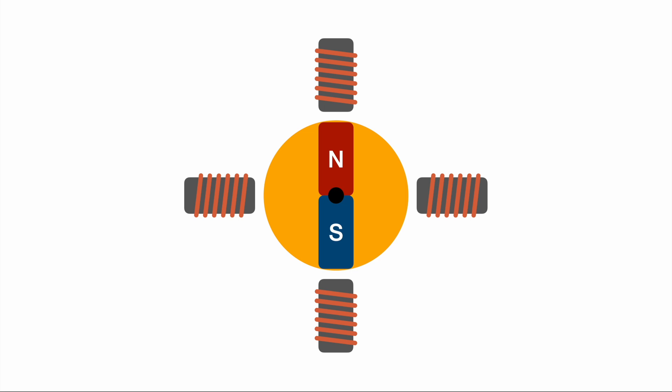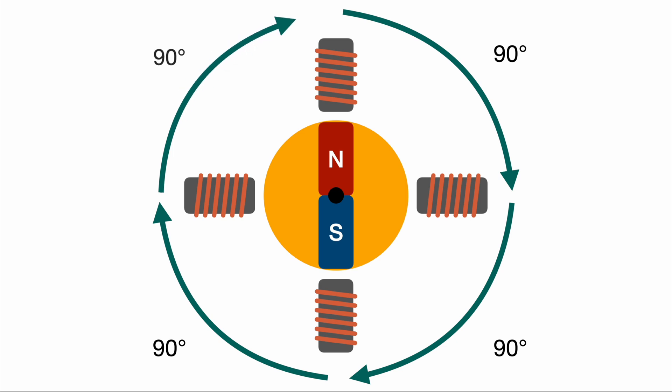If we repeat this process very fast this will result in a smooth rotation, but we also have the option to not do this process very fast and do it actually step by step, therefore creating steps of 90 degrees. So the motor will rotate in 90 degree steps and that's basically why it's called a stepper motor.